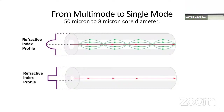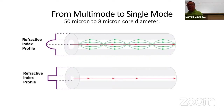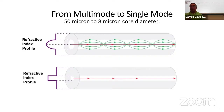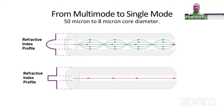Then we transitioned from multi-mode to single-mode. How do you do that? You just make the core so small there's only one path, getting rid of the pulse alignment problem. The downside is it's hard to couple because the light-carrying core is now eight microns — compared to 125 microns for the outer diameter, which is about the size of a human hair. Now the core is just eight microns, so lining two of them up to connect them was a real engineering challenge.